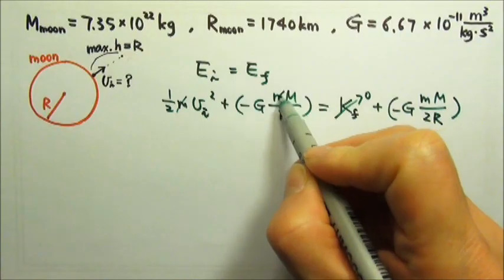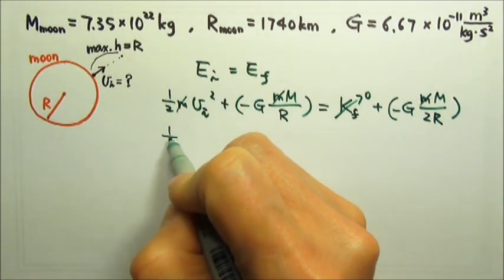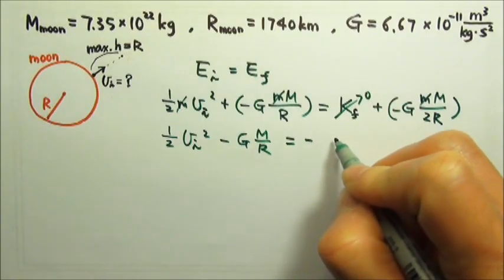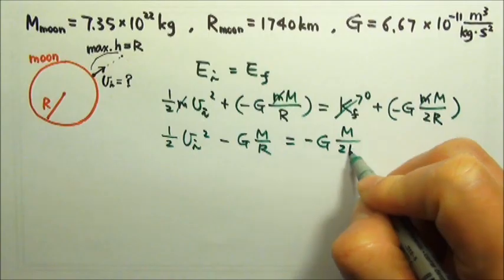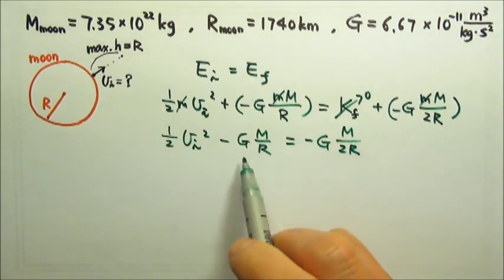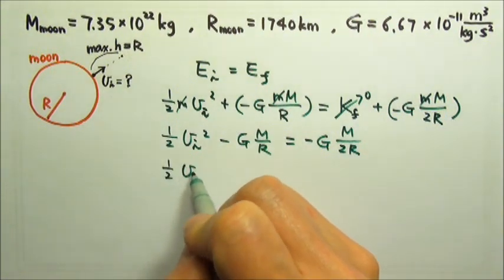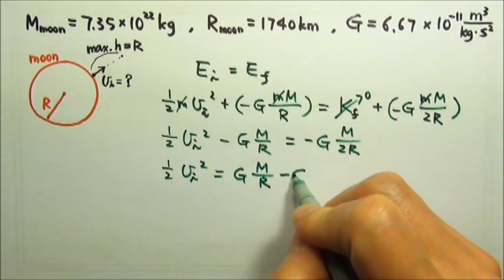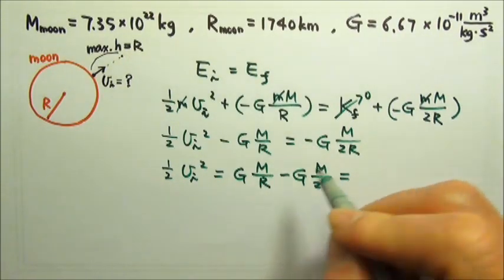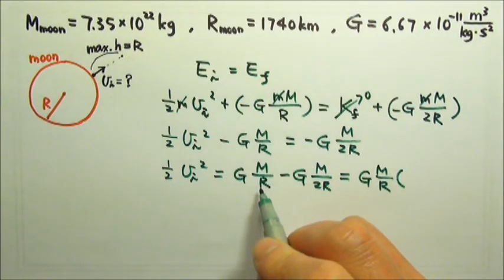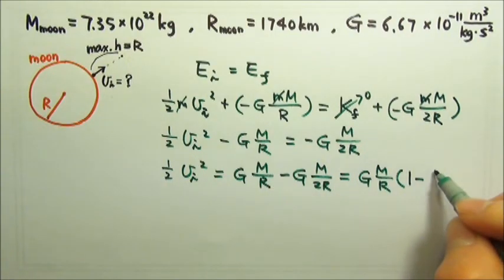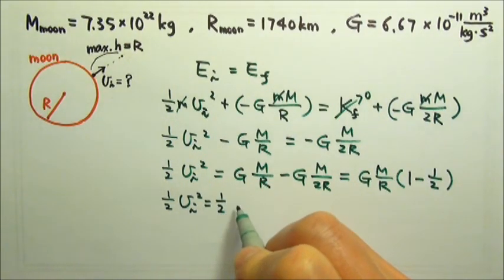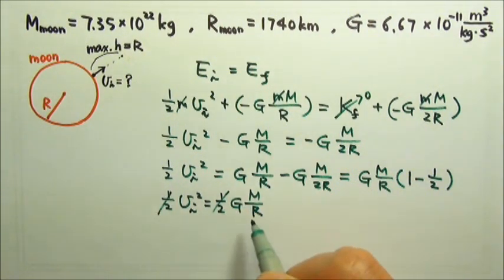Now every single term has little m, so we can cancel the little m. And then I have one half v i squared minus big G M over big R equals to negative big G big M over two R. After rearranging, I get one half v i squared equals to one half times G M over R. So I can cancel the one half and then take the square root. That's the square root of G M over R.